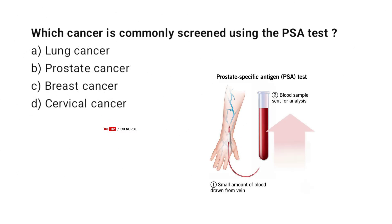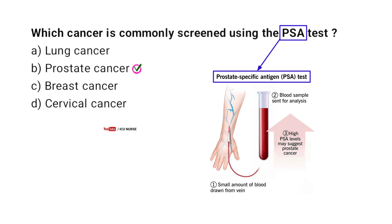Which cancer is commonly screened using the PSA test? A. Lung cancer. B. Prostate cancer. C. Breast cancer. D. Cervical cancer. Correct answer: B. Prostate cancer. PSA stands for prostate specific antigen. The PSA test measures the levels of PSA in the blood, which can be elevated in prostate cancer.